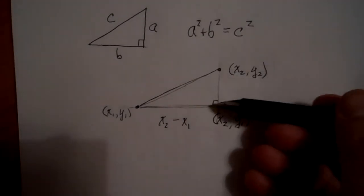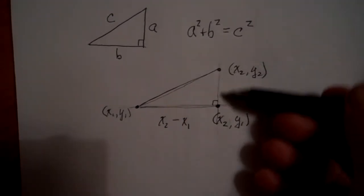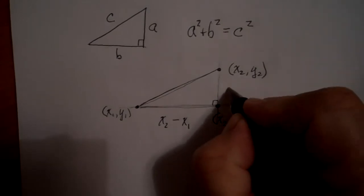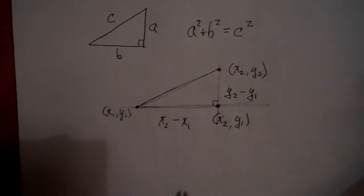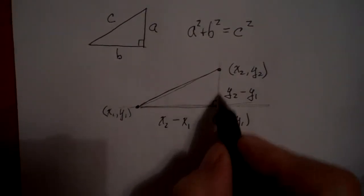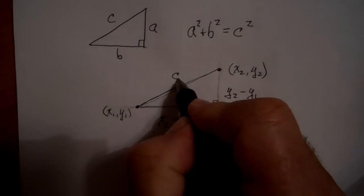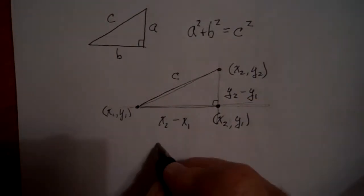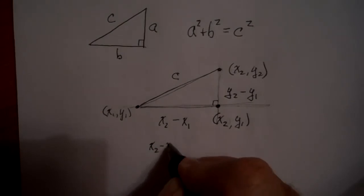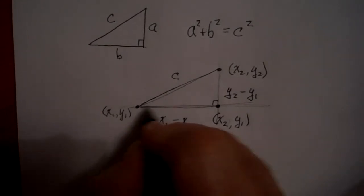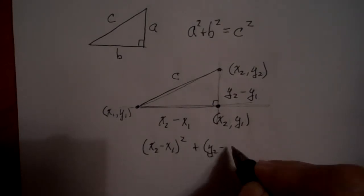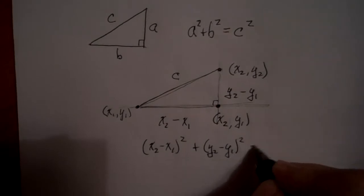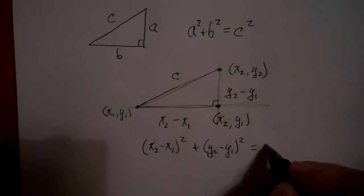Similarly, the length of the vertical segment can be found by taking the ending y-value minus the beginning y-value: y₂ minus y₁. So now, looking at the relationship between these three sides, we can see that (x₂ − x₁)² plus (y₂ − y₁)² will be equal to c squared.